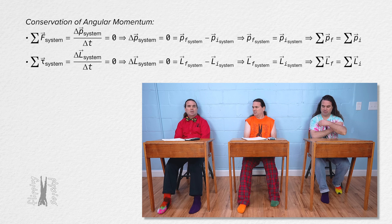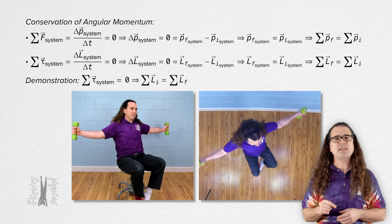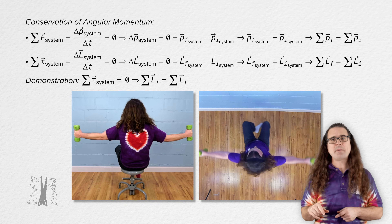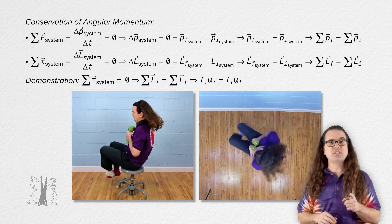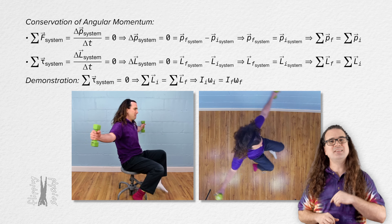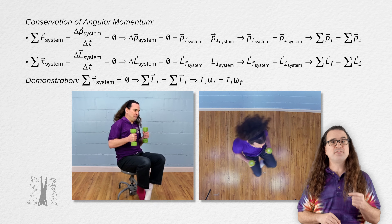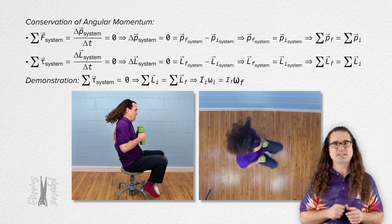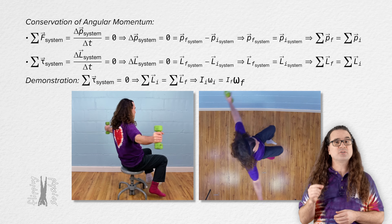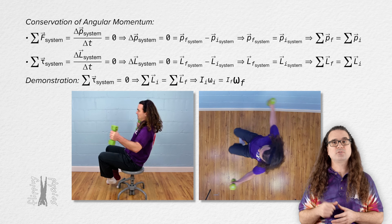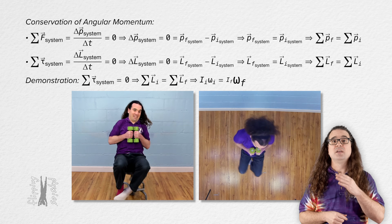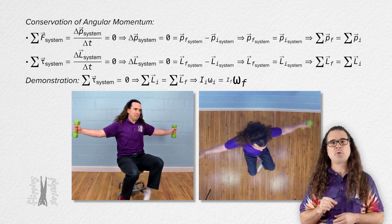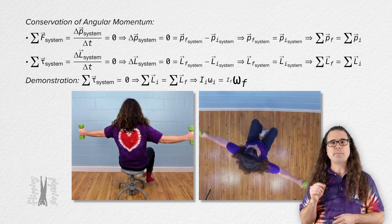A simple demonstration of this involves rotating with arms outstretched while holding two masses. Angular momentum of the system equals rotational inertia times angular velocity. When I pull both of my arms in, I decrease the distance those masses are from the axis of rotation and therefore decrease my rotational inertia. However, there is no external torque acting on the system, so the angular momentum of the system remains the same.